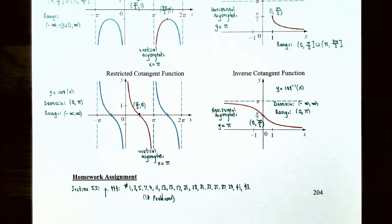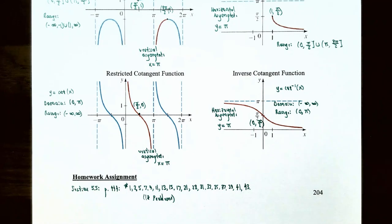Inverse secant, inverse cosecant, and inverse cotangent do not occur in trigonometry all that often because you can take secant, cosecant, and cotangent and change them to be in terms of sine, cosine, and tangent, then find the inverse that way. This finishes our video on the other four inverse trigonometric functions and their graphs. If you have any questions about examples in this video or homework for this section, please let me know. See you in the next video on inverse trigonometric functions and right triangles.